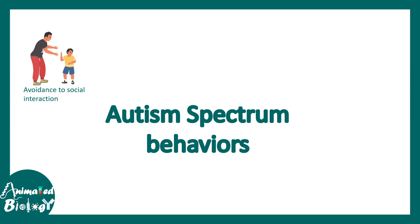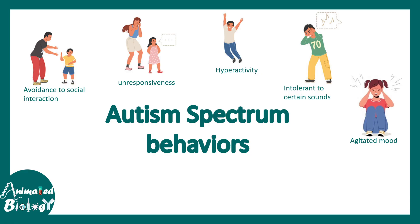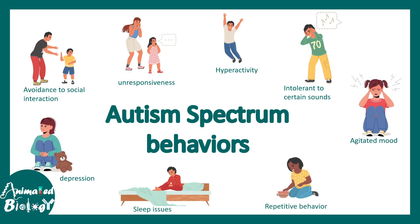There are different kinds of behaviors typical to autism. These include avoidance of social interaction, avoidance of eye contact, and unresponsiveness towards any kind of interaction — for example, a child being totally ignoring interaction with parents or refusing to hug them. Hyperactivity is sometimes prevalent. They could be intolerant to certain sounds and very sensitive to them. They might have an agitated mood, or on the other side of the spectrum, show highly depressed behaviors. Sleep-related disorders and repetitive behavior are very typical, and in extreme cases, epilepsy can also be associated with autism spectrum disorder.